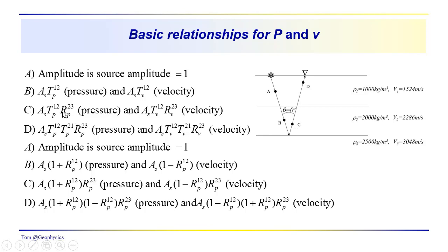At point C, the pressure wave is reflected from the second interface. So we have a product of terms: A_S times T_P(1,2) times R_P(2,3), where R_P(2,3) is the pressure wave reflection coefficient between layers two and three. And the same for the amplitude at point C for the particle velocity: A_S times T_V(1,2) times R_V(2,3).